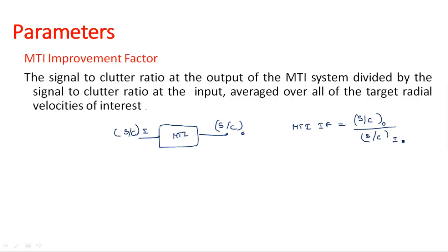When we look at this definition, it is similar to noise figure — except that for noise figure it is input-to-output, whereas for the MTI improvement factor it is output-to-input. The improvement factor is used to evaluate the performance of the MTI radar: it tells us what amount of clutter ratio is present at the output of the MTI radar divided by the clutter present at the input of the MTI radar.